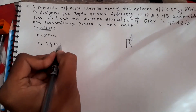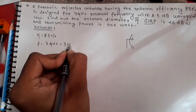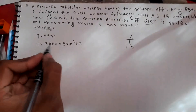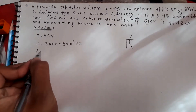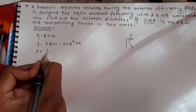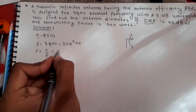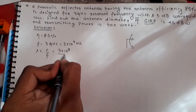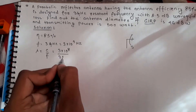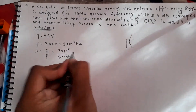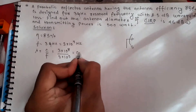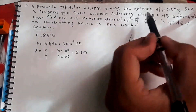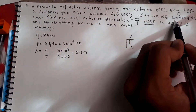The frequency is 3 × 10⁹ Hz. From this we can find the wavelength: λ = c/f, where c = 3 × 10⁸ m/s, giving a wavelength of 0.1 meter. Additionally, there is a waveguide loss of 2.5 dB, which I will indicate as L.